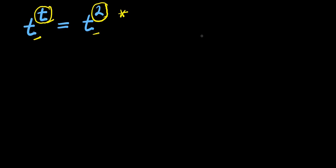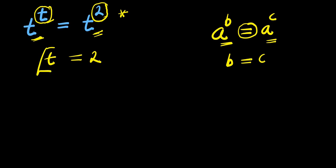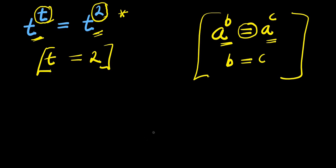Let's start by making use of this identity: if you have a to the power of b and this equals a to the power of c, when the bases are the same and there's an equality sign, then you can compare the exponents — that means b equals c. So applying that here, we can compare the exponents and get t equals 2, because the bases are the same. However, this is just one of two solutions, and this is not actually fully solving — it's just making use of the identity.